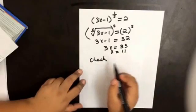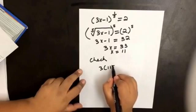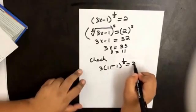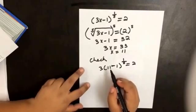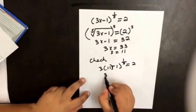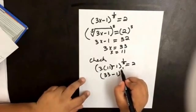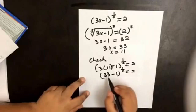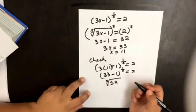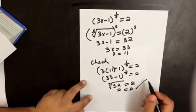If we check: 3 times 11 minus 1 to the 1 over 5 equals 2. So we have 33 minus 1 to the 1 over 5 equals 2, which is 32 to the 1 over 5. The fifth root of 32 is 2, so that's correct.